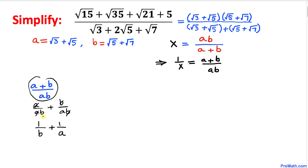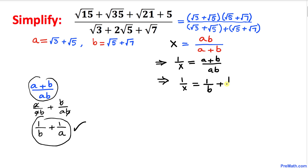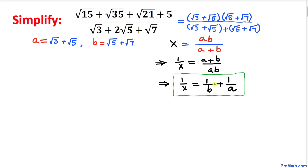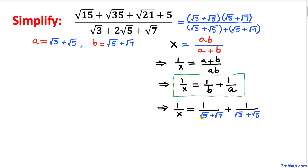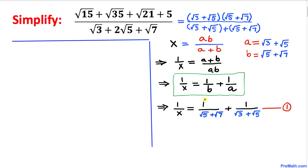So 1/x equals 1/b plus 1/a. We know that b is (square root of 5 plus square root of 7) and a is (square root of 3 plus square root of 5). Plugging those values back in gives us our new equation — call this equation number one — and now let's simplify each of these two fractions separately.